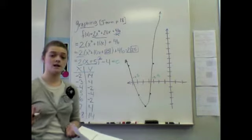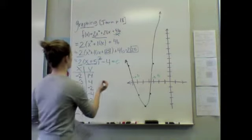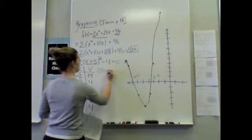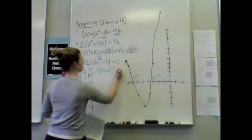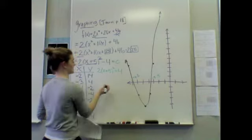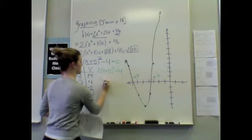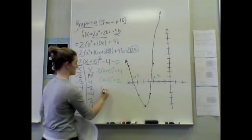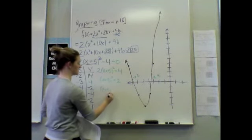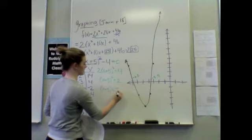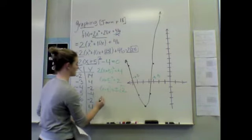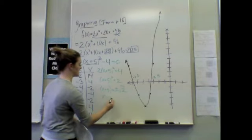But what I can do is I can take my vertex form and set it equal to 0. Once again, because I'm looking for an x-intercept, my y-coordinate should be 0. I'm going to add 4 on both sides. Now, I'm going to divide everything by 2. We have x plus 5 squared equals 2. I will take the square root of both sides. And that will give me a plus or minus radical 2. And the last thing, I will subtract 5. So, we get that x is equal to negative 5 plus or minus radical 2.